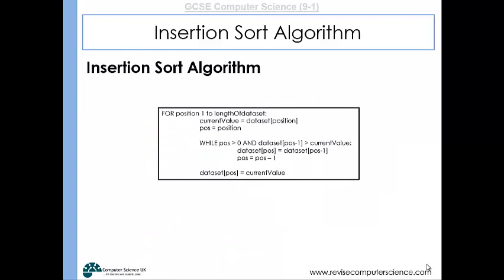In terms of an algorithm in pseudocode, you can see that we've set up a loop which is going to loop through each item of data in the data set. Whilst the position of the current value that we're looking at is greater than zero, which means that we haven't yet got to the start of the data set, we are trying to compare the previous items.